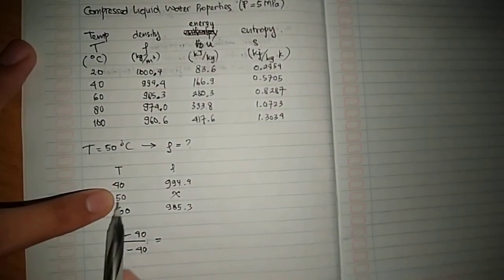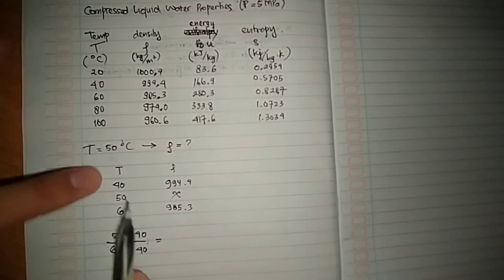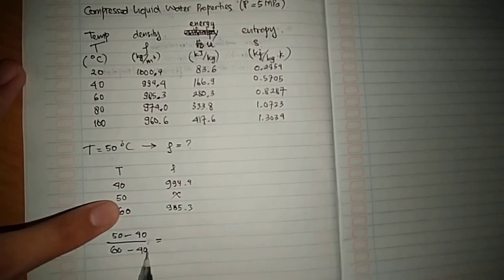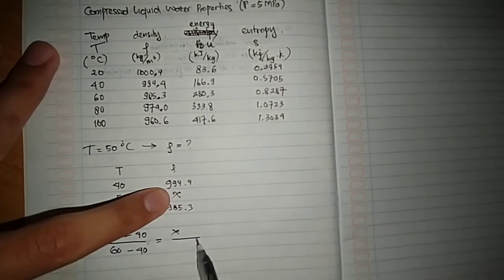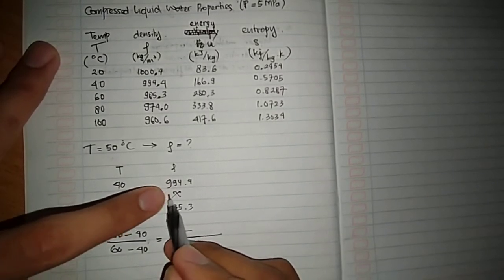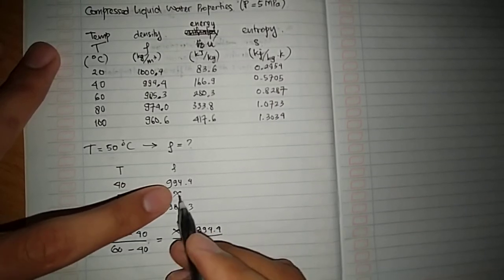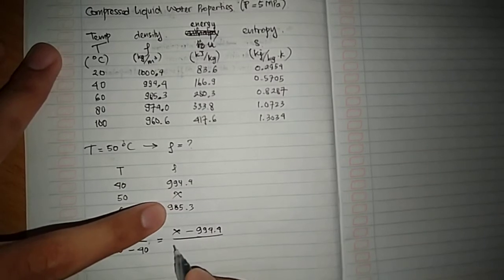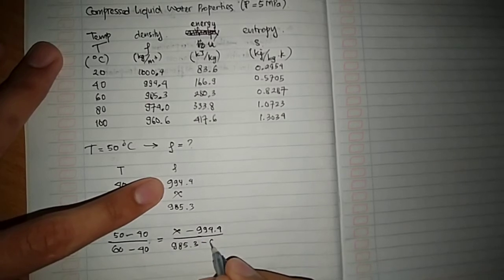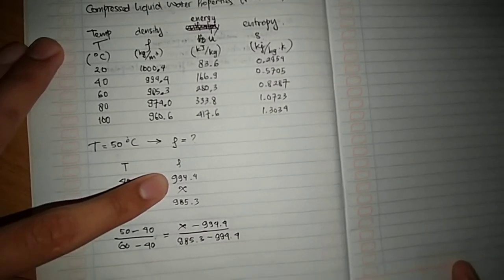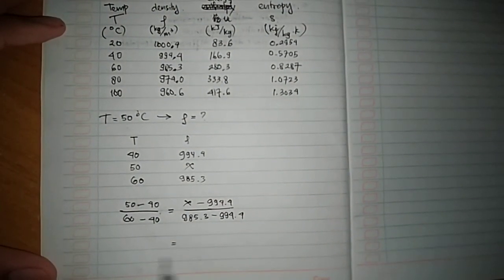Equals: middle minus top, divided by bottom minus top. Now we have this kind of equation. Then we are going to find this x.